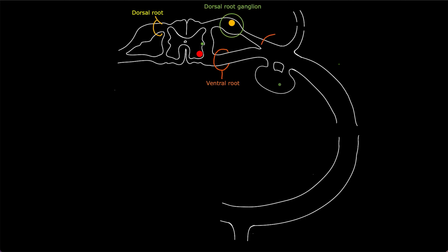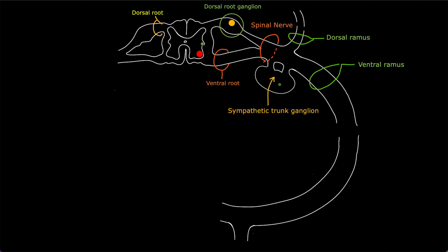The dorsal root and the ventral root join to give us a spinal nerve. Each spinal nerve divides anteriorly and posteriorly — the posterior one is the dorsal ramus, and the one located anteriorly is the ventral ramus. The structure labeled by the yellow arrow is the sympathetic trunk ganglion.